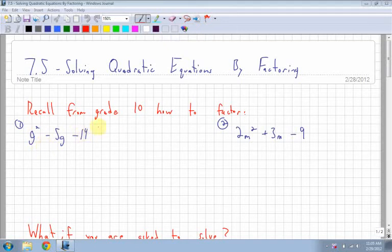We would look at the end number, negative 14, and we would need two numbers that multiply to negative 14 and add to the middle. So two numbers that multiply to the end and add to the middle, which is negative 5.